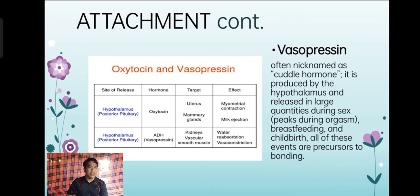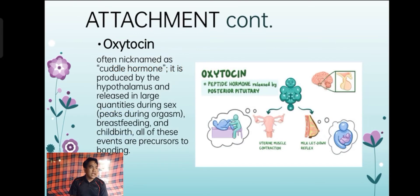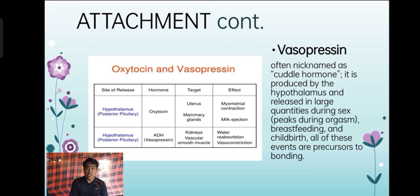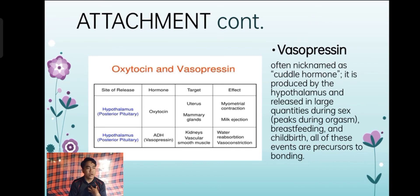Vasopressin, also known as ADH (antidiuretic hormone), produces effects of water reabsorption and vasoconstriction. It is present in our hypothalamus — located in the brain — and stored in the posterior pituitary. The target organs of vasopressin are the kidneys and vascular smooth muscles, producing water reabsorption and vasoconstriction.